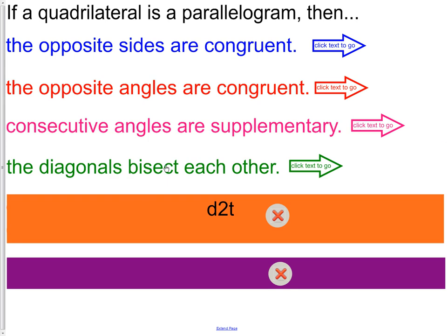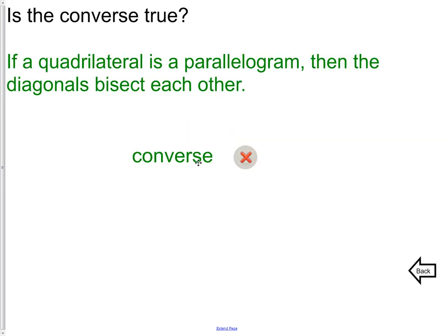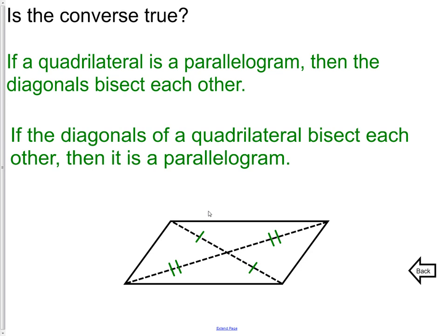Diagonals bisect each other — this is also true. If you have diagonals that bisect each other, you have a parallelogram. So if we knew we had segments of length 6 and 6, and 8 and 8, that would be enough to say yes, we definitely have a parallelogram.